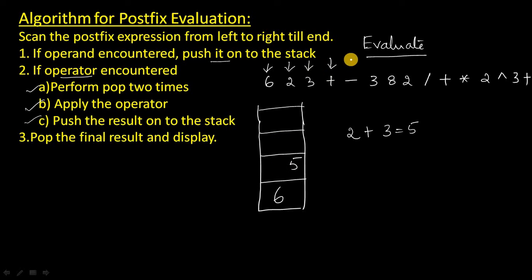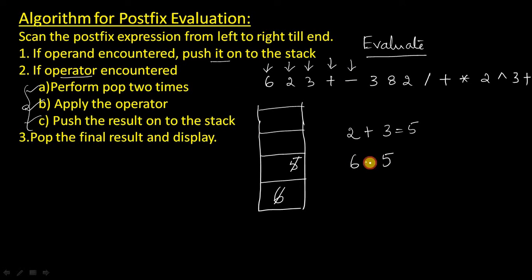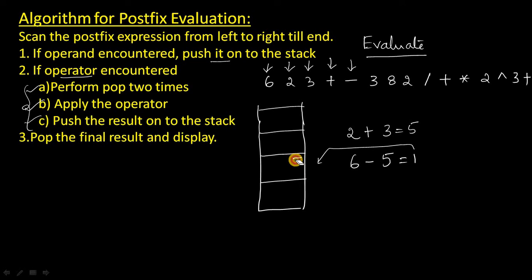So what is the next one? Next one is minus, which is an operator. So again, follow these three steps one by one. First, pop the 5 and write it on the right side. Next, pop this 6 and write it to the left of this 5. Next, apply the operator — that is 6 minus 5, which equals 1. Push the result onto the stack. Erase the 6 and 5, and add 1 to the stack.